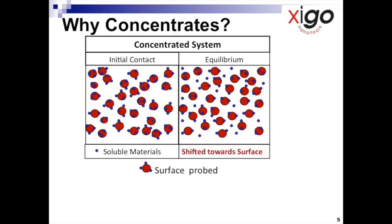In the schematic on the left hand side, the header is labeled initial contact. What this refers to is any suspension as it is made or formulated.